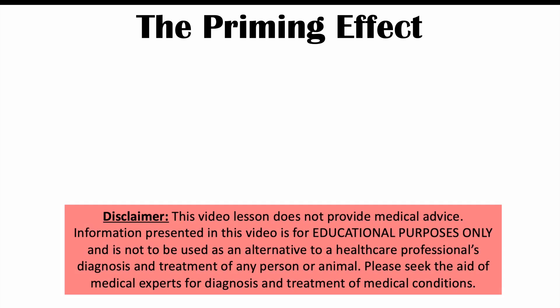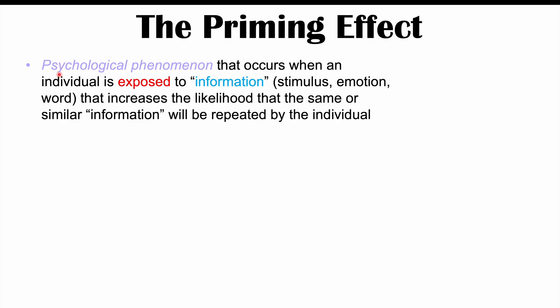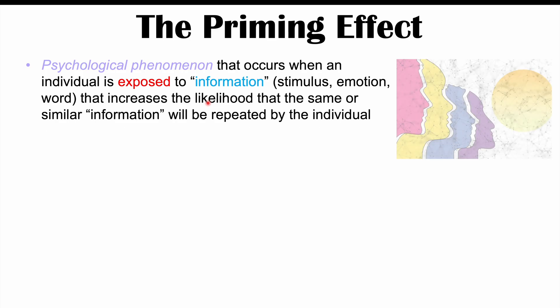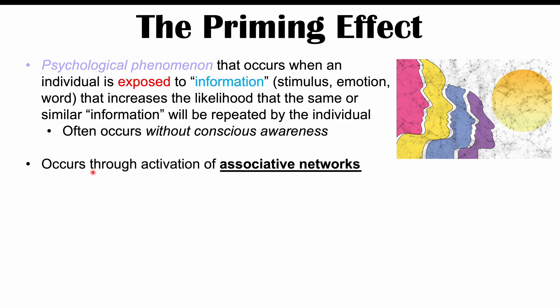This lesson is on the psychological effect known as the priming effect. The priming effect is a psychological phenomenon that occurs when an individual is exposed to information — often in the form of a word, stimulus, or emotion — that increases the likelihood that the same or similar information will be repeated by the individual. The priming effect often occurs without conscious awareness, through activation of what we call associative networks.